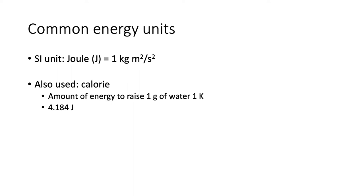Another energy unit that is used is the calorie. The calorie was the original metric unit, defined as the amount of energy needed to raise one gram of water by one kelvin. But because this is supposed to be a derived unit, that wasn't very useful, so we default to the joule. A calorie is 4.184 joules — a number you will see quite a bit, especially in the next video.